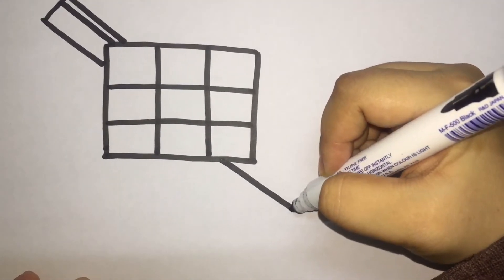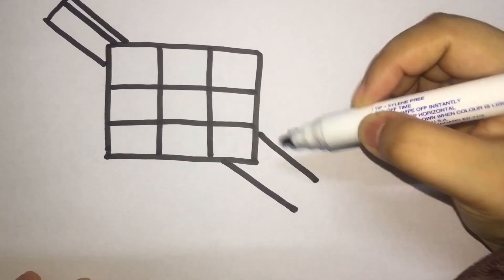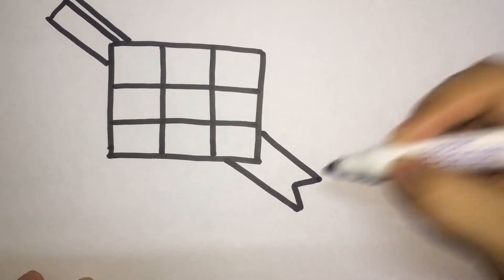And then another one here, but this one we make a bit different. We make like a ribbon at the end of the line.